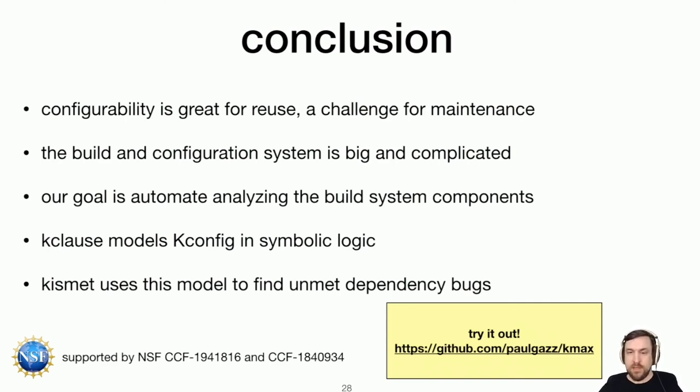We talked about k-clause today, which models kconfig as symbolic logic. We talked about Kismet, which uses that modeling in order to verify that there are unmet dependency bugs in the kernel kconfig specification files. All of our tooling is free and open source. It's available via Git at this link on the slide, so be sure to check it out. There's some other tooling in there as well. And special thanks to the National Science Foundation for funding part of this research. And thank you very much for watching this talk. Have a good day.